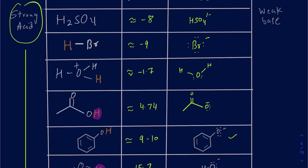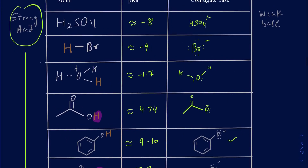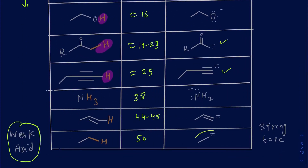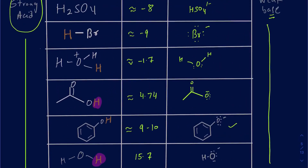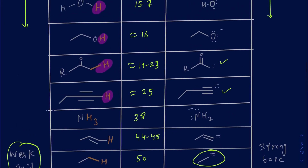When we look at the conjugate bases on the other side and talk about their stability or basicity, it's exactly the opposite. If you have a strong acid, its conjugate base is a weak base — so at the top of the list you have weak bases. Conversely, the conjugate base of a weak acid — for example the carbanion — is a very strong base. Strong acid gives a weak conjugate base; weak acid gives a strong conjugate base.